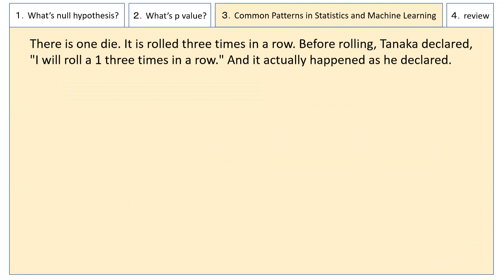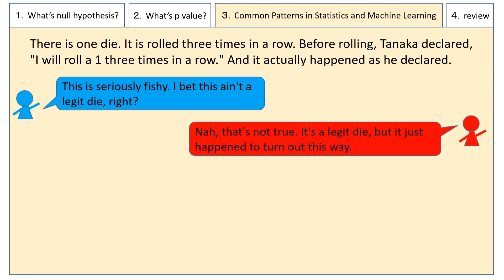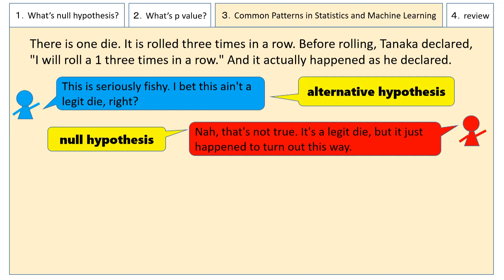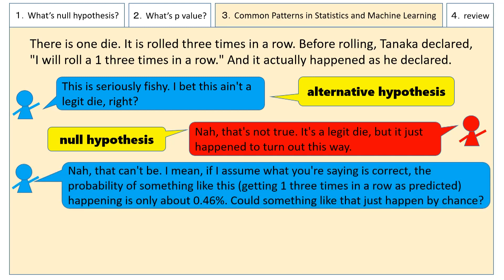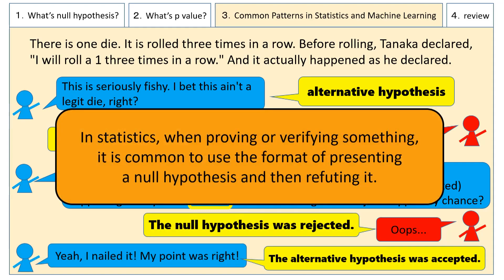Let's recap the process. There is someone using statistics to reveal something, and there is someone who is negating it. The negating opinion is the null hypothesis, and the opinion trying to reveal something is the alternative hypothesis. The person with the alternative hypothesis supports their claim using probability theory: "If what you're saying is true, the probability of something like this happening is only blah blah percent." If that probability is rare, the person with the null hypothesis would say "Oops" and concede. This pattern is commonly used in statistics.